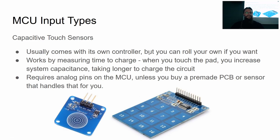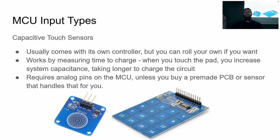There are also capacitive touch sensors. These will usually come with their own controller, but you can do it yourself with more code and tweaking. They work by measuring the time to charge — turning the circuit on and seeing how long it takes the voltage to reach peak value using an analog input. If you put your finger on the pad, that changes the capacitance of the system which changes the charging time, so it knows something has touched the pad. These do require analog pins on the microcontroller unless you have one with its own controller board.